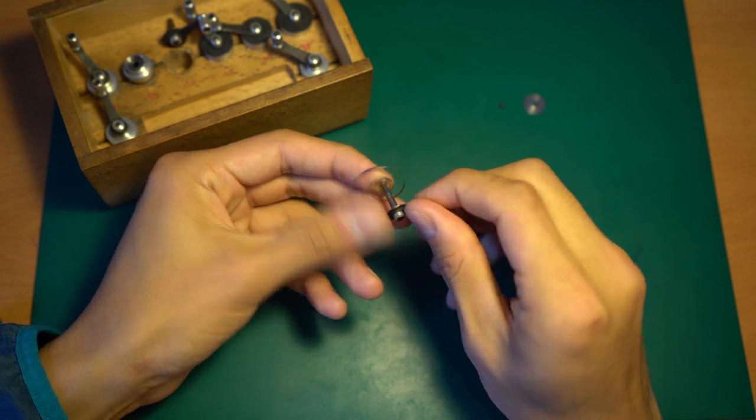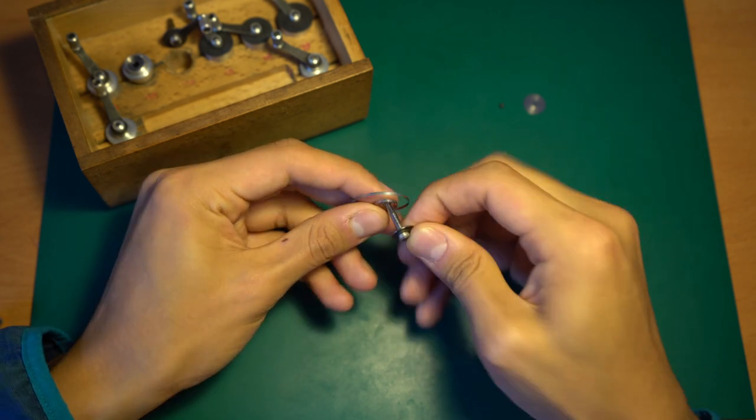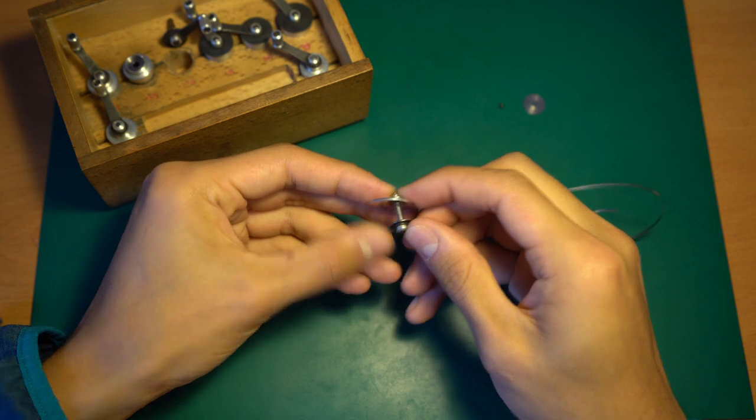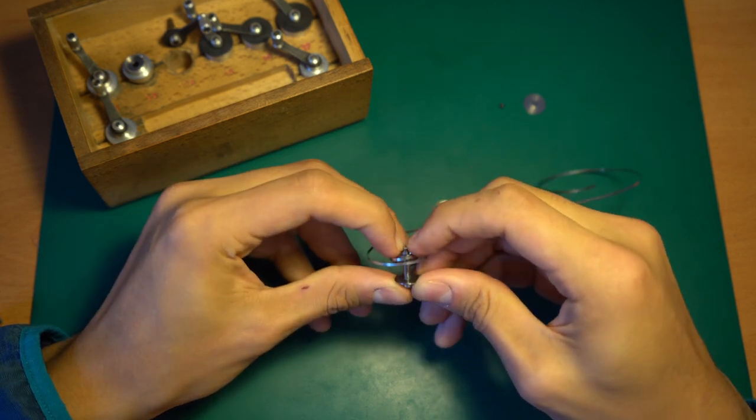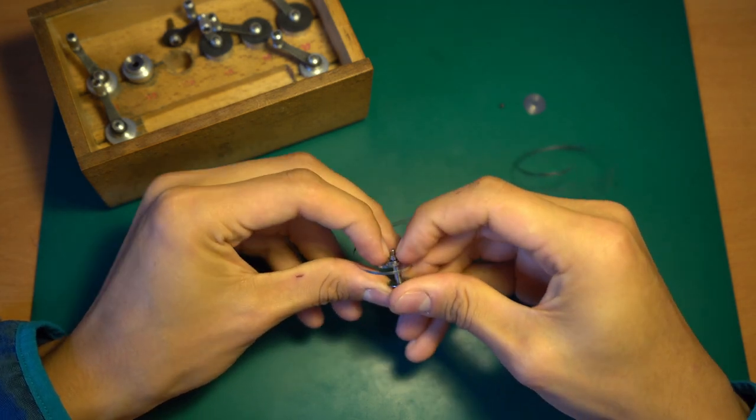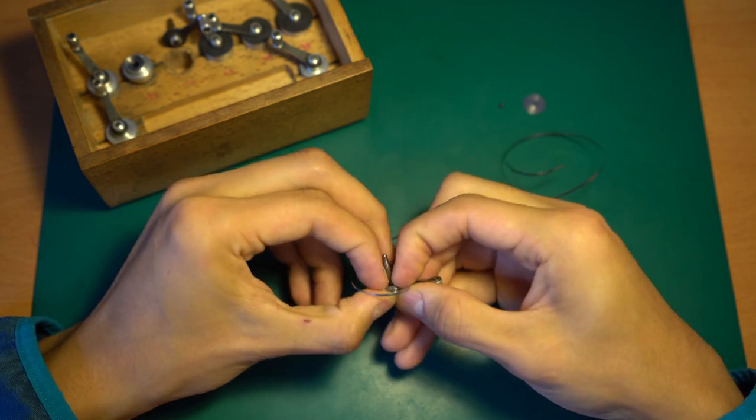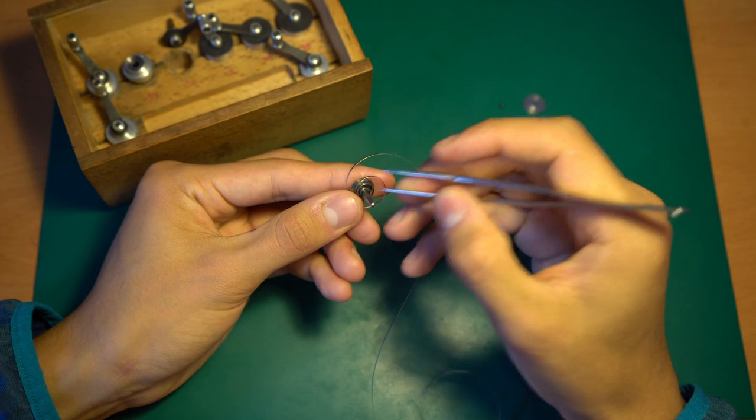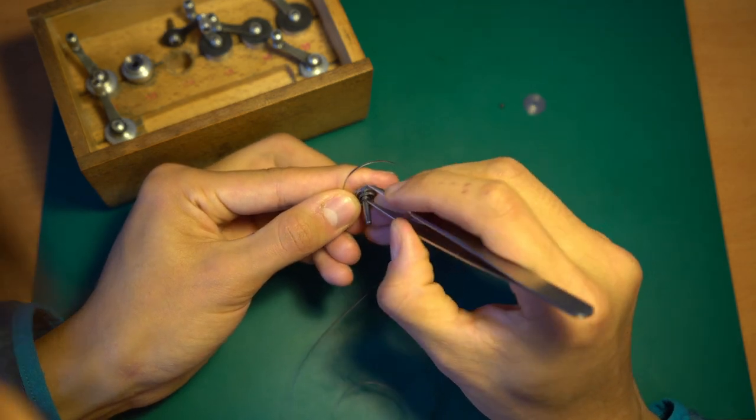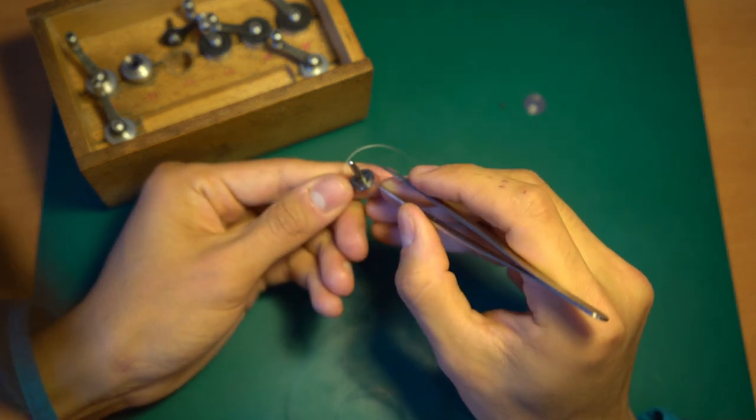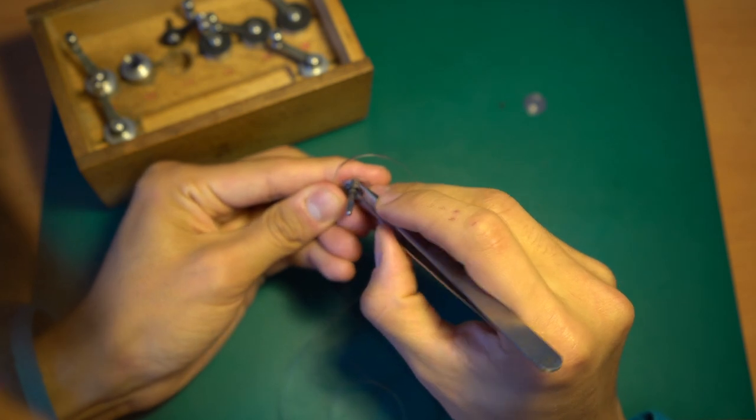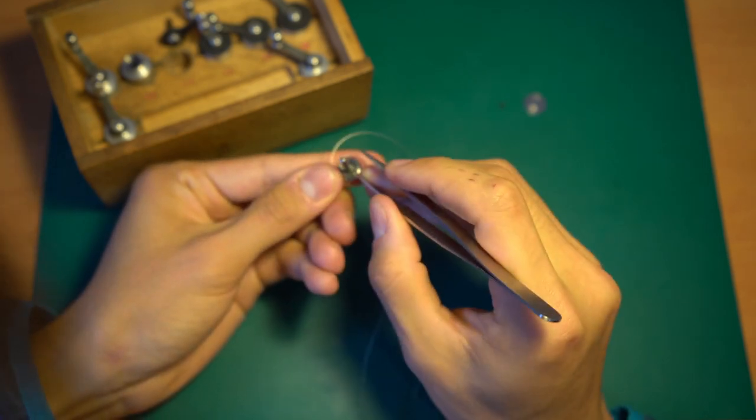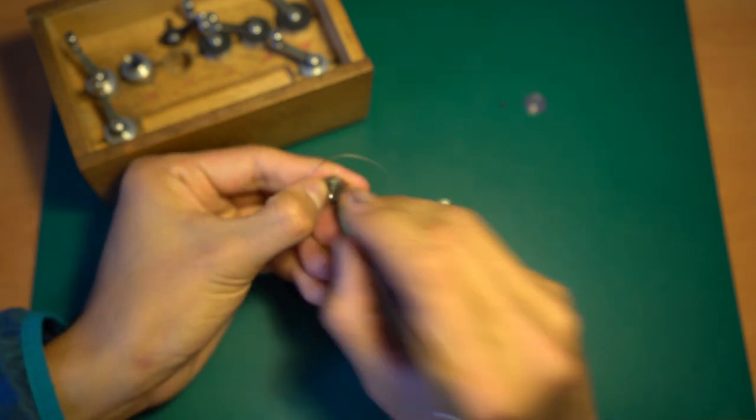You align the hook with the slot on the mainspring so it can hook in easily. Press it down here, press the mainspring all the way down to the bottom of the arbor where the hook is. If it doesn't latch in automatically, you can always use your tweezers to manually lift the coil so the hook can hook into the latch on the mainspring.